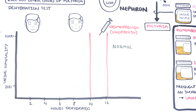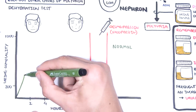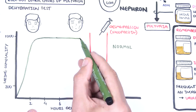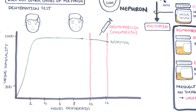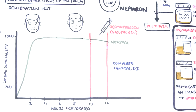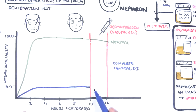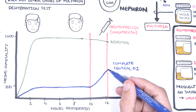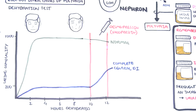A normal person undergoing the dehydration test will have an increase in urine osmolality by 2 to 4 hours, because the body is adequately producing vasopressin and retaining water. By hour 10 when desmopressin is given, urine osmolality is essentially unchanged since there are already adequate amounts of ADH. If a patient has central diabetes insipidus — no production of ADH — urine osmolality will remain low and dilute throughout dehydration. When desmopressin is given at hour 10, it acts on the kidneys and causes water retention, producing an increase in urine osmolality.